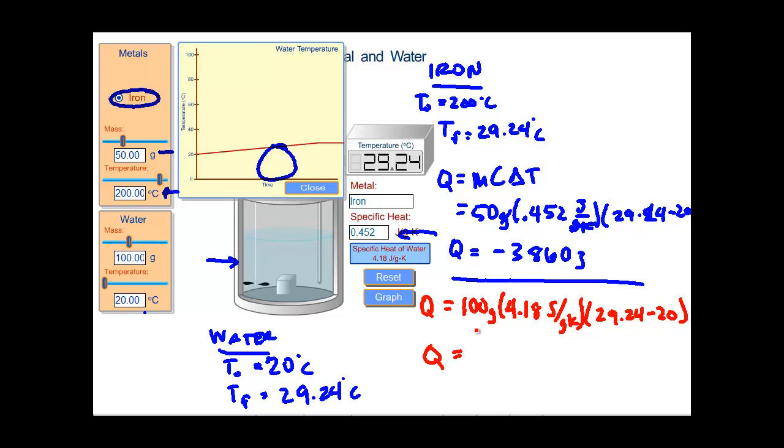times the change in temperature, 29.24 minus 20 degrees Celsius. And what we get there, and you can calculate on your own, is something very close to positive 3860 joules. What's happening is that the heat stored in here goes out into the water and it picks up exactly the amount of heat that we lose.